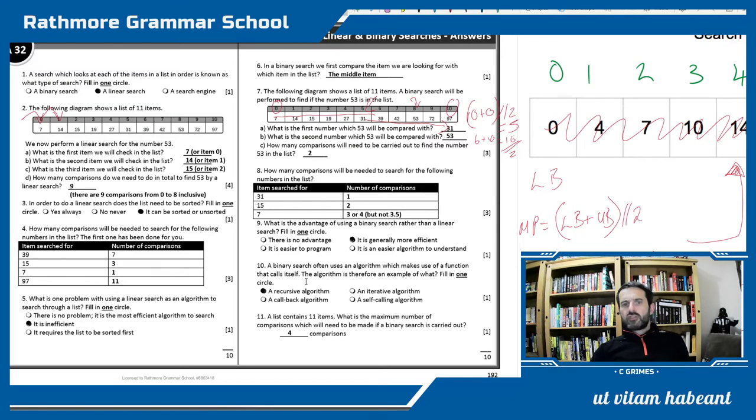Question 10 might need some clarifications as a term that you might have come across. It makes use of a function that calls itself. In computer science we call that recursive, a recursive algorithm. A function that makes a call to itself. So for example, the binary chop is constantly doing the same thing and that's what we call recursion. We learn more about that, well more about that really at AS level.